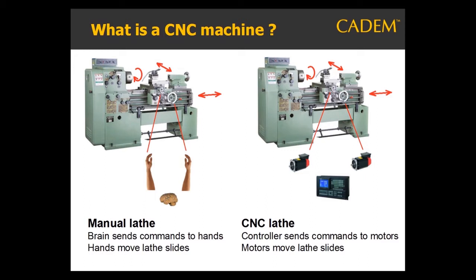On a CNC lathe, a computer is the brain, motors do the work of hand wheels, and electronic feedback sensors do the work of eyes. The controller sends signals to motors, which move the tool along the longitudinal and cross slides. Based on feedback from feedback sensors, the controller keeps adjusting the position and speed, so that you get the required dimensions and surface finish on the part.